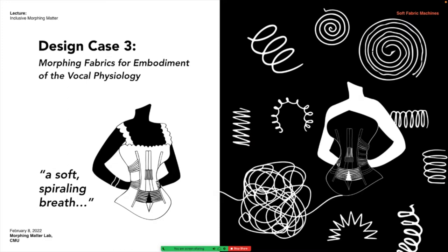Practically speaking, this type of interactive corset is one of our current case studies — as an interactive technology that renders abstract concepts used in vocal pedagogy, such as when a voice teacher tells a student to take soft spiraling breaths, which means nothing to a novice learner. By embodying these abstract concepts in actuated fabrics, we can promote a concrete and accessible understanding of them.